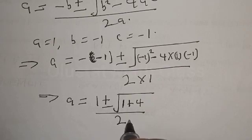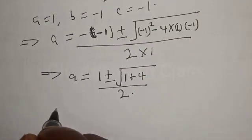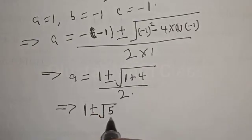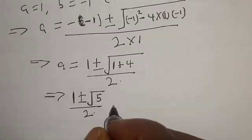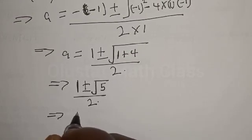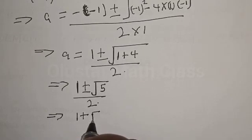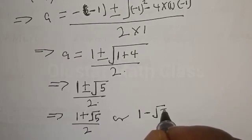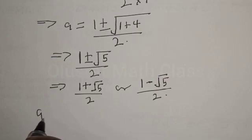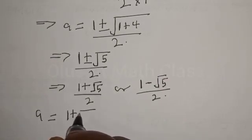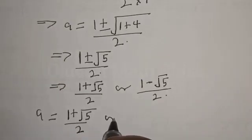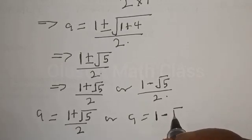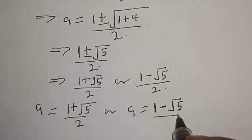This implies that we have 1 plus or minus square root of 1 plus 4 — that is square root of 5 — over 2. Therefore, this implies that we have 1 plus root 5 over 2, or 1 minus root 5 over 2.